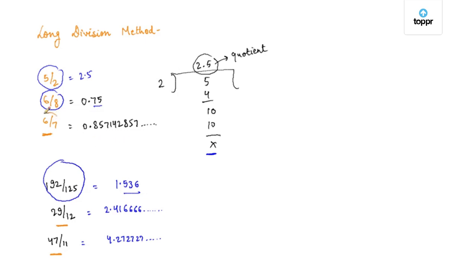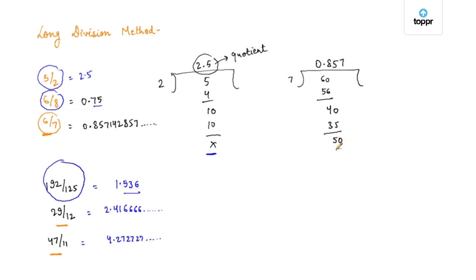Let us take 6 by 7 as an example. If I divide 6 by 7, we can see that the division keeps on going. We started from 6 here and we have come back to 6 again — meaning if we move any further, the digits in the quotient will repeat themselves.